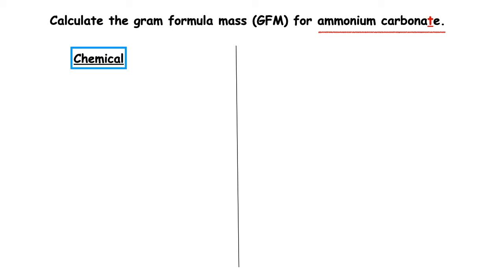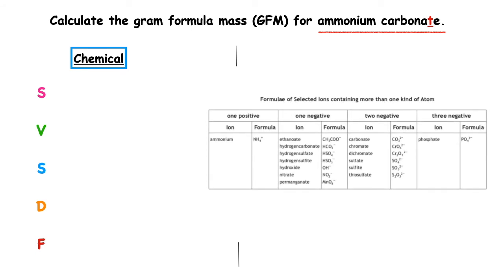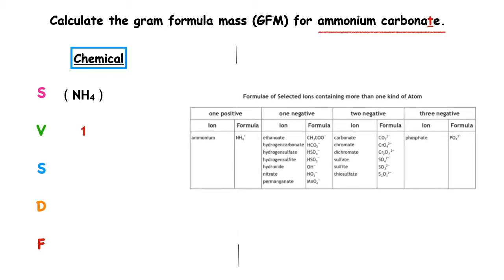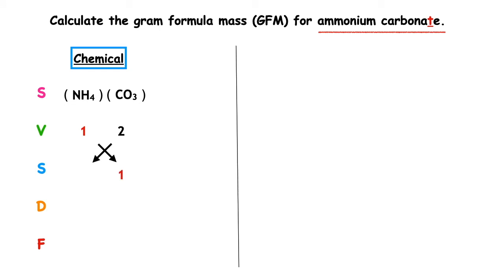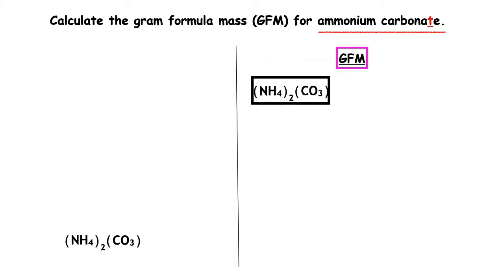This is the last worked example: we want to calculate the gram formula mass for ammonium carbonate. This one's tricky because it's made up of two group ions. We start with our SVSDF. Using page 8, the chemical symbol for ammonium is NH₄ — keep it in a bracket, valency 1. Carbonate has the symbols CO₃ — keep a bracket round it, valency 2. We swap the valencies over; the highest number both can be divided by is 1. So the formula is (NH₄)₂(CO₃). I'm going to keep the brackets there to make it a little easier.